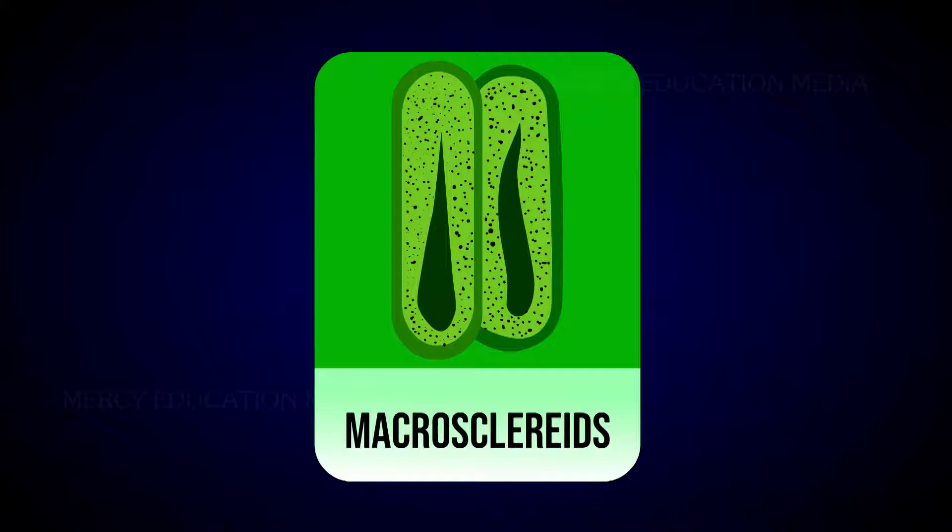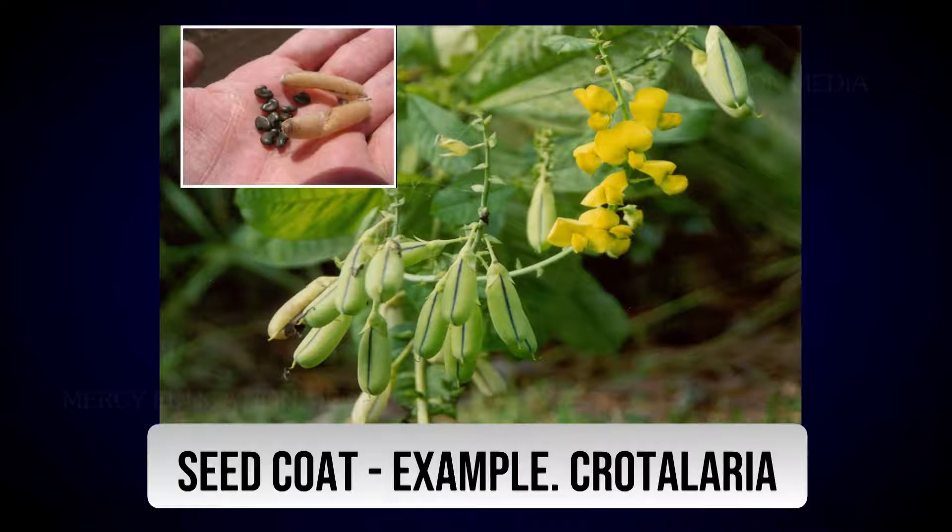The elongated rod-shaped scleroids are called macroscleroids, that is, rod cells. They are found in the outer seed coat. Example: Crotalaria.